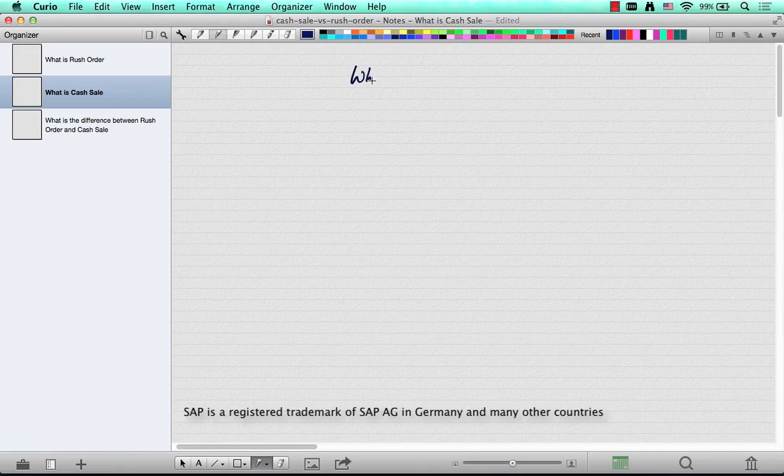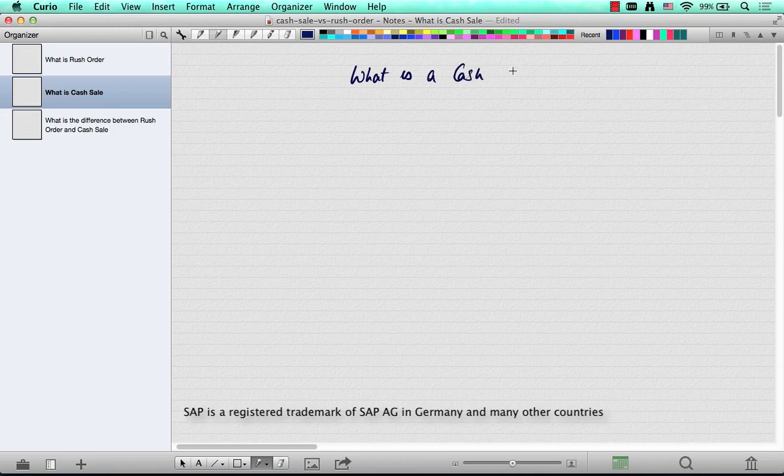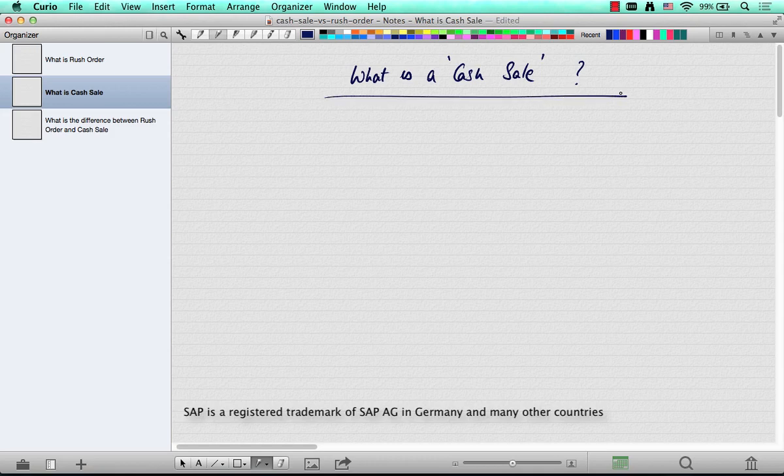The next question is what is a cash sale? The cash sale is a little more involved than a rush order. A rush order is very simple.